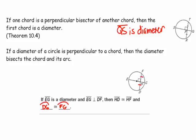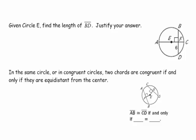In circle E, we need to find the length of segment BD. AC is clearly a diameter — it's a chord through the center. Since it's perpendicular to chord BF, it must bisect it. So BF is also 6, which means BD equals 12. The justification: if a diameter is perpendicular to a chord, then it is the perpendicular bisector of that chord.